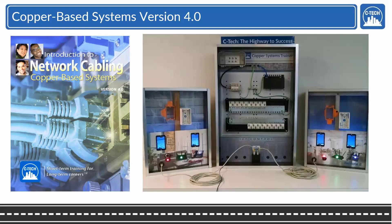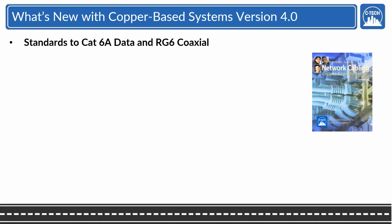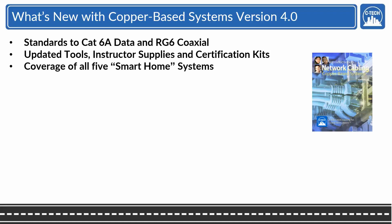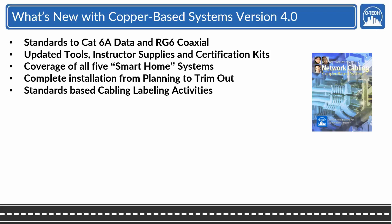The program is completely updated and revolves around the CST or the Copper Systems Trainer. Some of the attributes of the new program are the updated CAT 6A RG6 coaxial cable, updated tools and structure supplies and certification kits. We get into all five systems of the smart home, how they work and how they function and their usage. We do complete installation from planning the trim out on the CST.